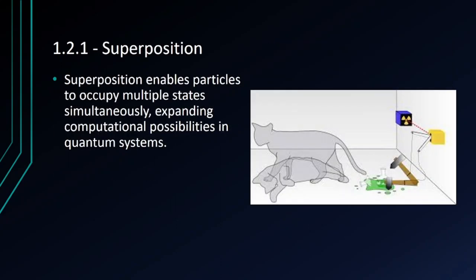Superposition in quantum computing refers to the ability of a qubit to exist in multiple states simultaneously. However, it is a common misconception that a qubit can be both zero and one simultaneously. Rather, a qubit can be in a superposition of zero and one.